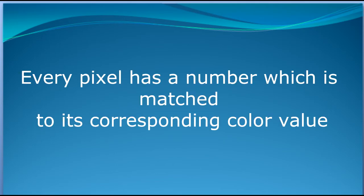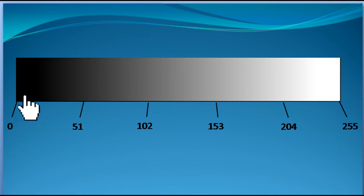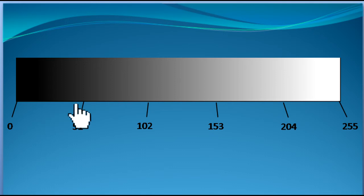Every pixel contains a number value, and this number is matched to a particular color. For example, the value 0 corresponds to black and the value 255 corresponds to white. So we have a range from 0 to 255. If the value is 50, it will be some shade of gray that is more black because it is closer to 0. If the value is 200, it will be a shade of gray closer to white. In this way we give numbers to colors.